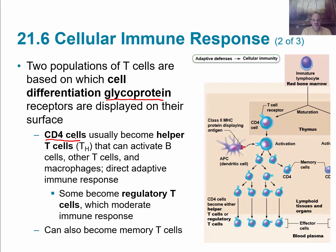The CD4 cells usually are going to become T-helper T-cells, which we'll symbolize as TH. These helper T-cells can activate B-cells, other T-cells, and macrophages. They also direct the adaptive immune response. Some CD4 cells are going to become regulatory T-cells, which moderate the immune response, and some of them are going to become memory cells.